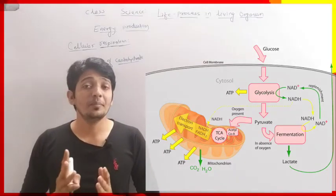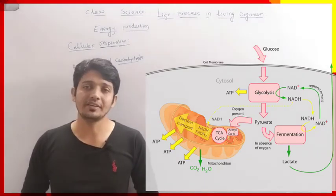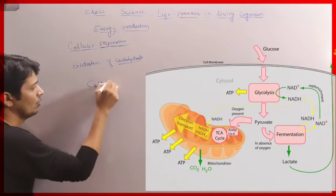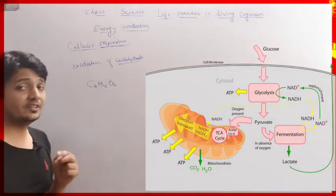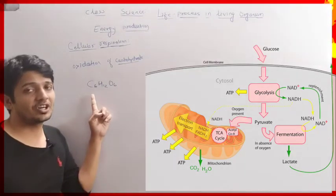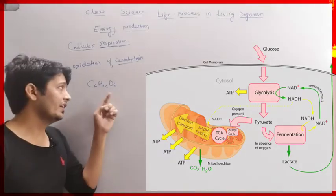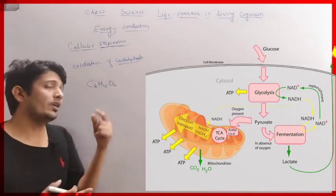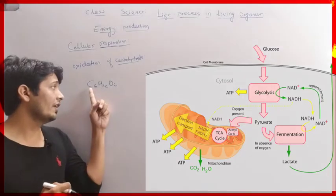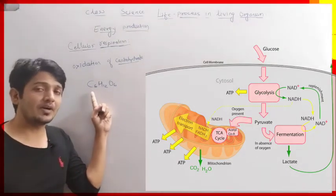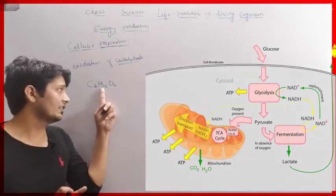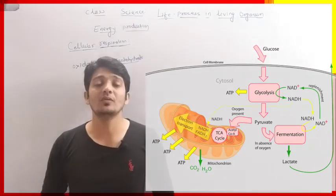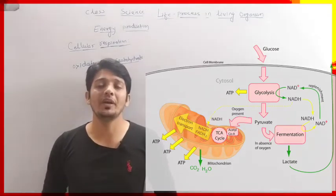As we know, in our body the main energy-producing nutrient is carbohydrate. Carbohydrate is nothing but glucose, whose formula is C6H12O6. Glucose contains six carbon atoms in its molecular structure. Complete oxidation of the glucose molecule takes place in aerobic respiration. When carbon is fully oxidized it forms carbon dioxide, and water H2O is formed by the oxidation of hydrogen. So in complete oxidation of glucose, carbon dioxide and water molecules are formed.